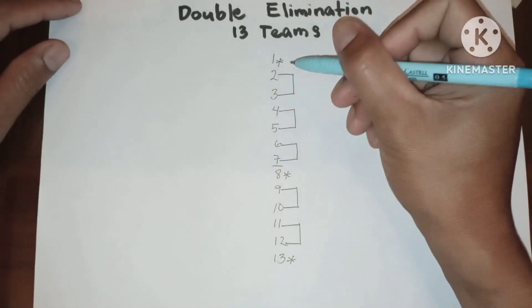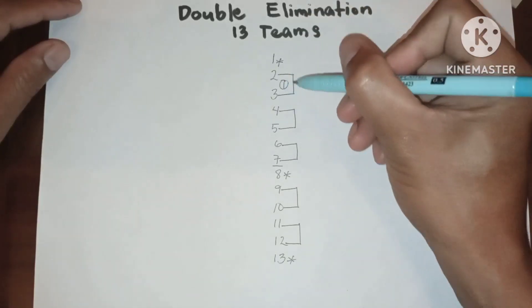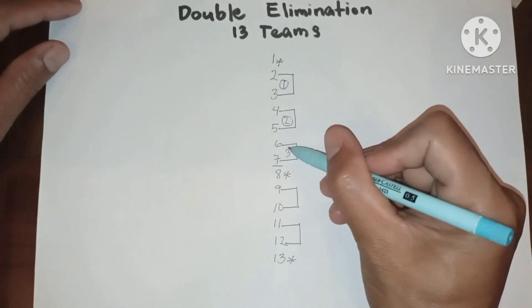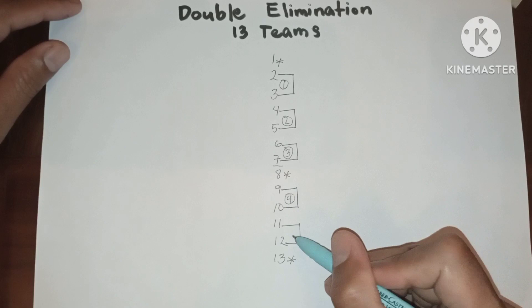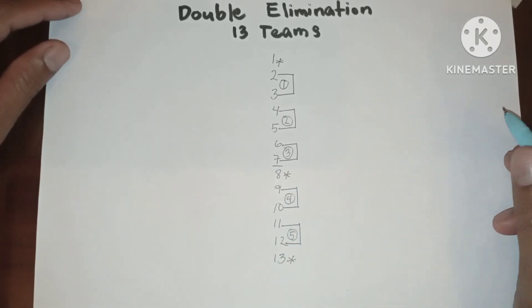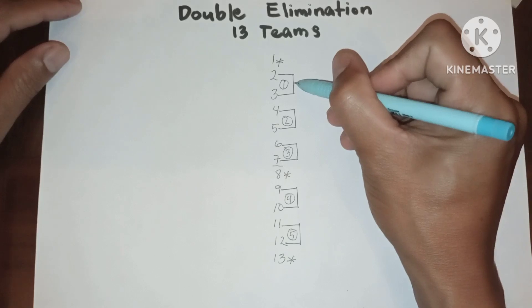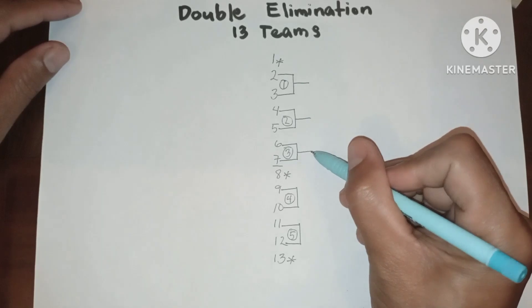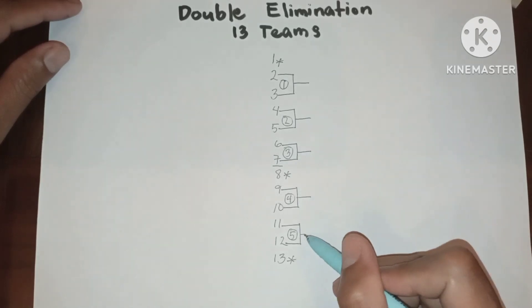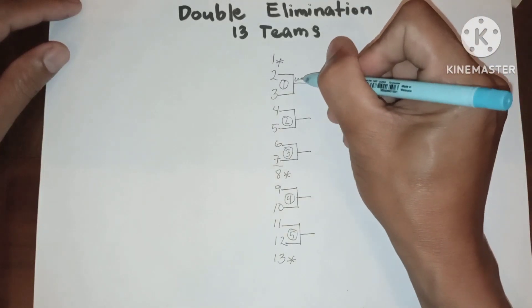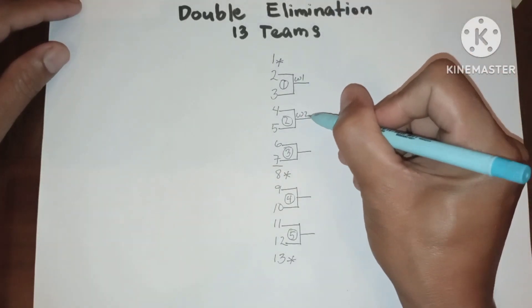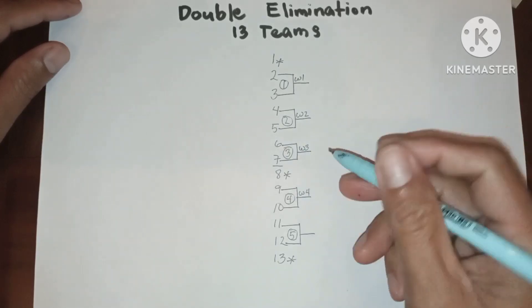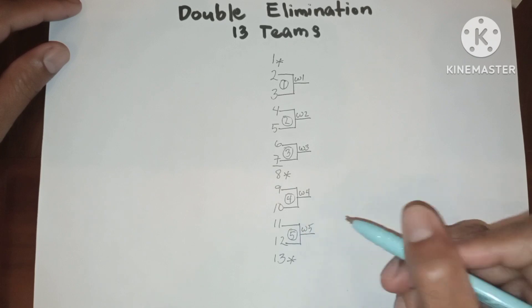The game number from the tab, and then let us have the result from the tab again. We have winner 1, winner 2, winner 3, winner 4, winner 5.